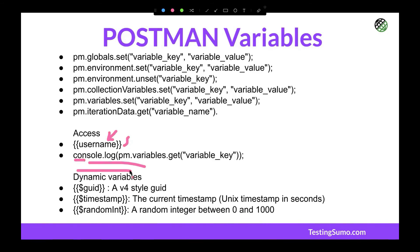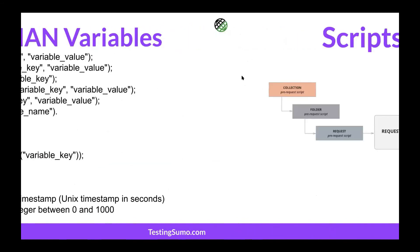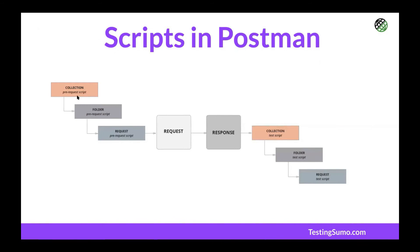Postman also has dynamic variables that are automatically created — you don't have to set them. $guid returns a unique 16-character string, useful for unique IDs or session IDs. $timestamp returns the current Unix timestamp in seconds. $randomInt returns a random number from 0 to 1000. Regarding script execution order: if you have a pre-request script, it runs first at the collection level, then folder level, then the individual request.